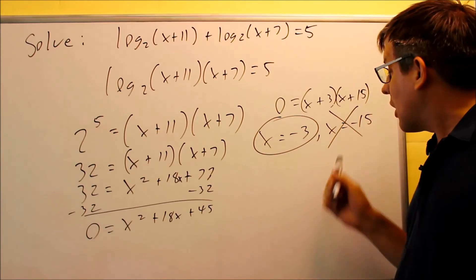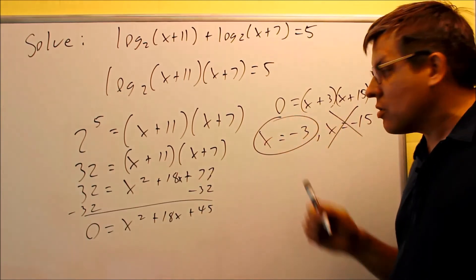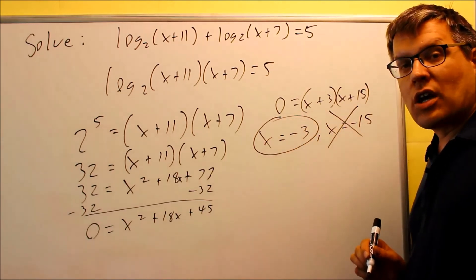So because of that, we're crossing out negative fifteen. This one only has one answer, that answer is going to be x equals negative three.